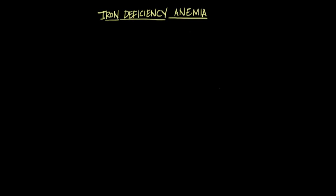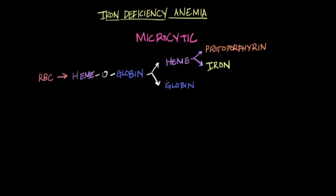Iron deficiency anemia is anemia due to a deficiency in iron, and this is a type of microcytic anemia. You already know this because of the diagram showing that iron is a really important component of heme, and heme is essentially half of hemoglobin.